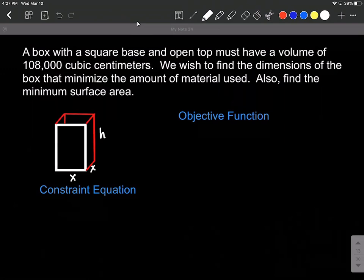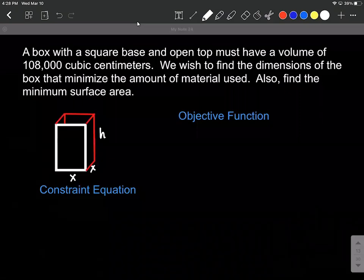Next up we want to both construct a constraint equation which usually comes from some number that's given to us. And then we want to create an objective function. This is whatever we're trying to maximize or minimize. So first of all the constraint equation. We are told that the volume must be 108,000 cubic centimeters.